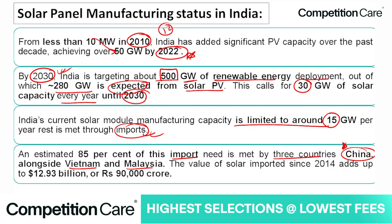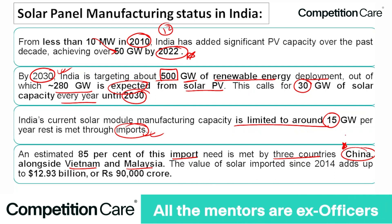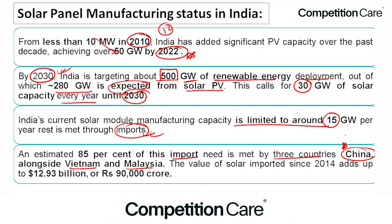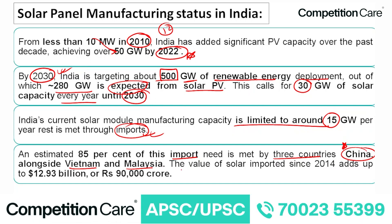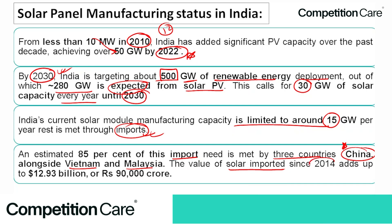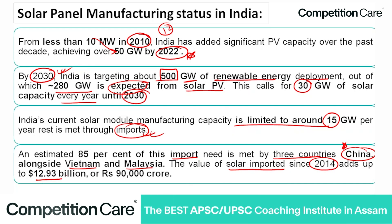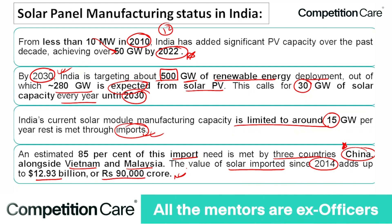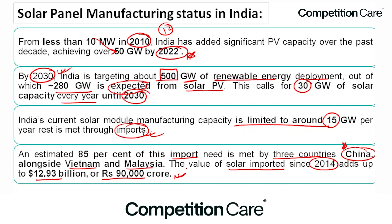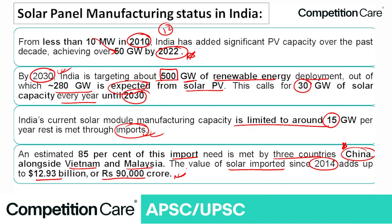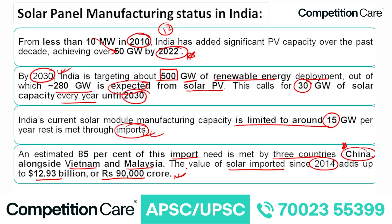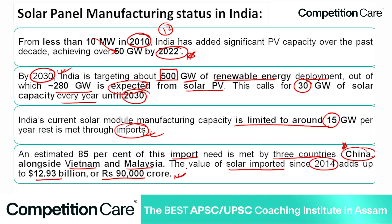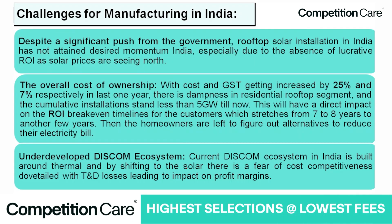The value of solar panels imported since 2014 adds up to $2.93 billion or approximately 90,000 crores rupees. This is a major chunk of money going to other countries. India wants to become Atmanirbhar (self-reliant) in solar manufacturing and reduce this import dependency.